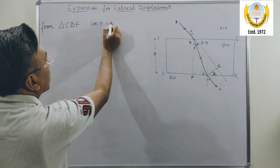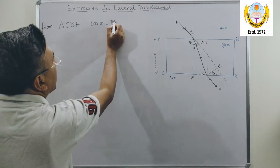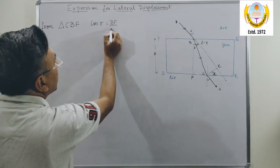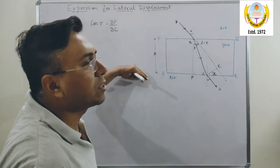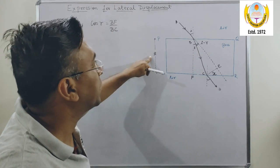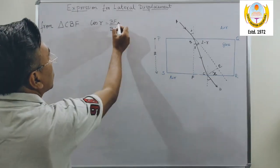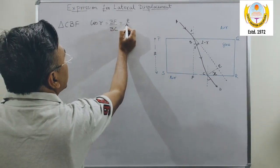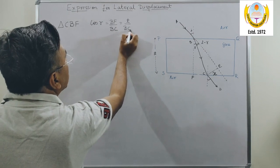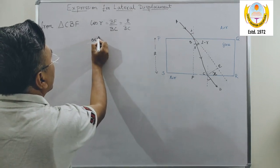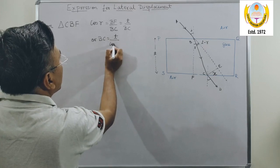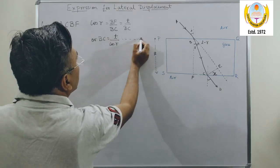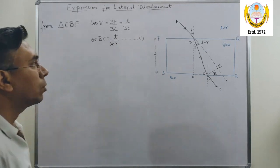And BF is nothing but the thickness of the glass slab which we represent by T. So this can be further written as T upon BC, or BC equals to T upon cos R. This is equation number 1.